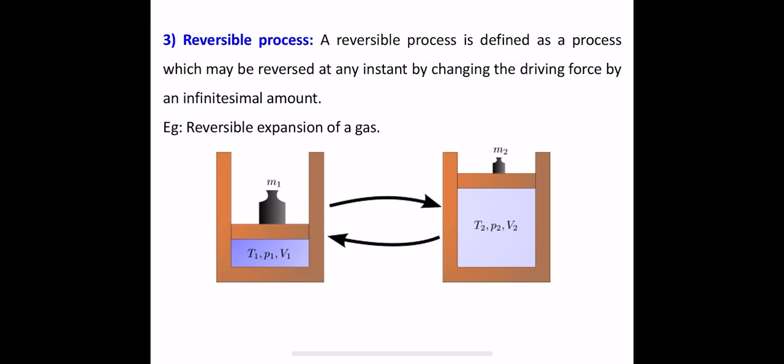The next process is a reversible process, defined as a process which may be reversed at any instant by changing the driving force by an infinitesimal amount. For example, if a certain amount of heat is transferred from A to B, again from B to A that same amount of heat can be transferred — that is a reversible process. An example is the reversible expansion of a gas.